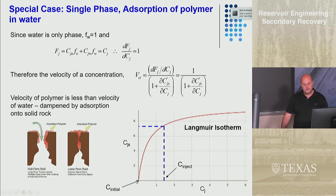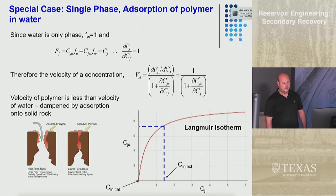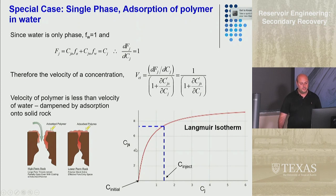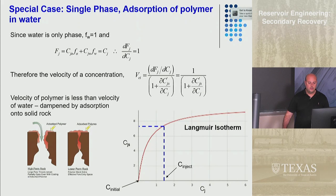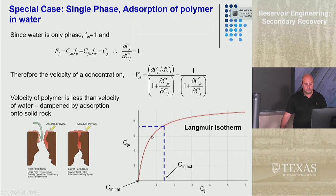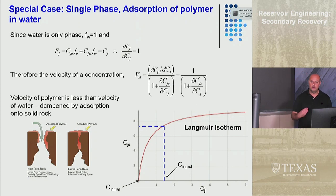Initially the concentration of polymer in the reservoir is zero since we inject it. We inject at a certain concentration and from the adsorption isotherm curve we can determine CJS — how much has adsorbed onto the rock surface. The derivative of that curve, the partial of CJS with respect to CJ, gives the slope of the tangent line at a given concentration, which tells us the velocity of that constant concentration.